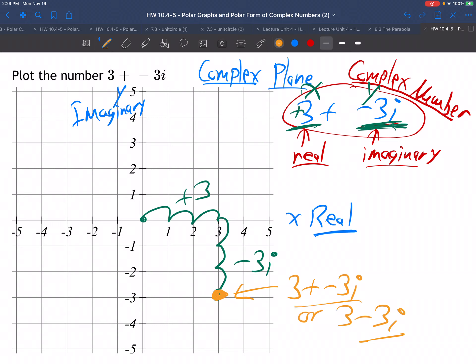There it is. That's the dot we put on the complex plane. That one dot represents the complex number 3 plus negative 3i, or 3 minus 3i, same thing. There we go.